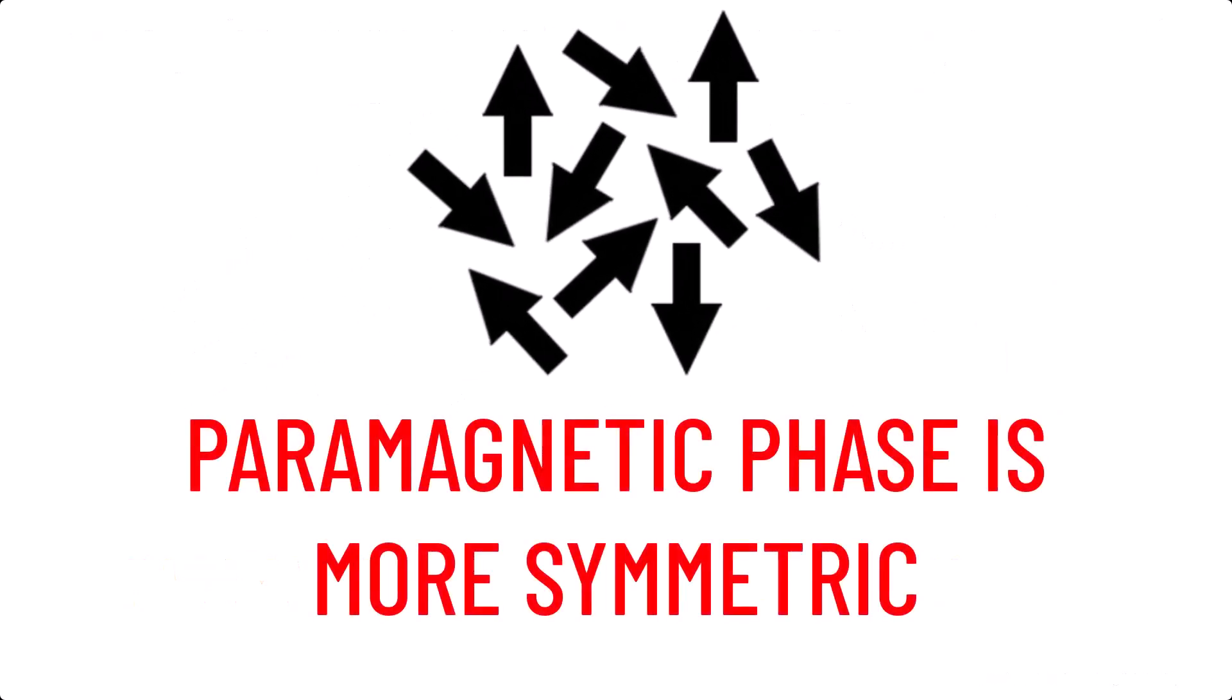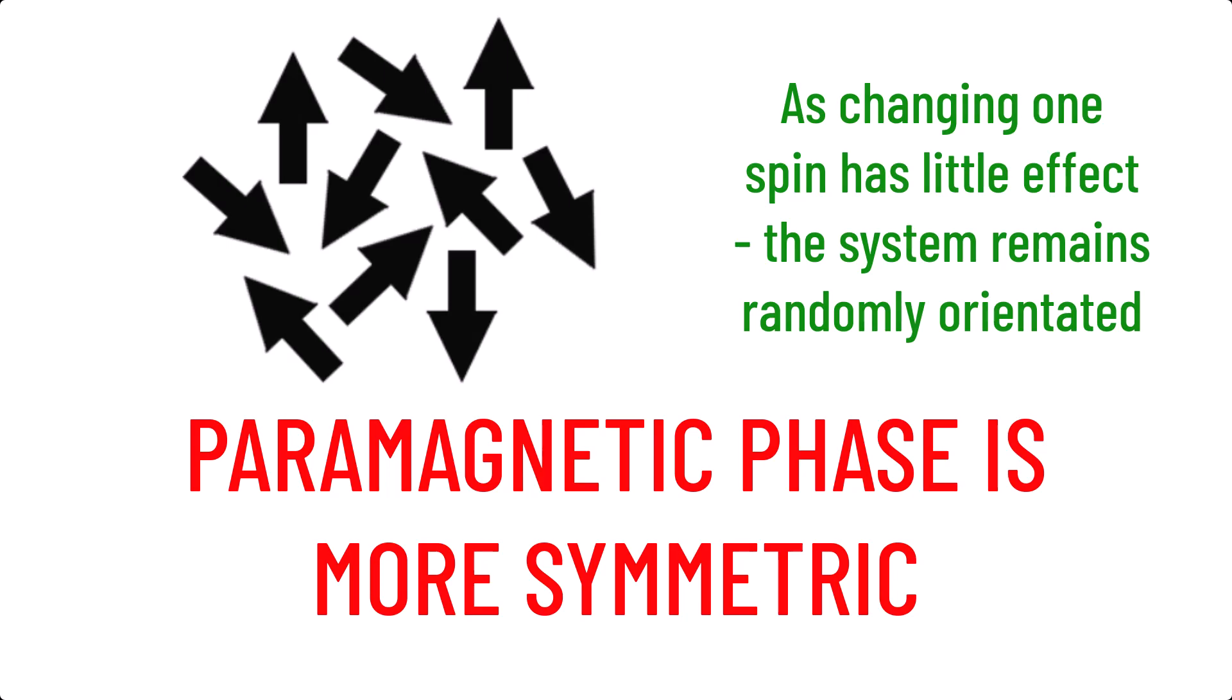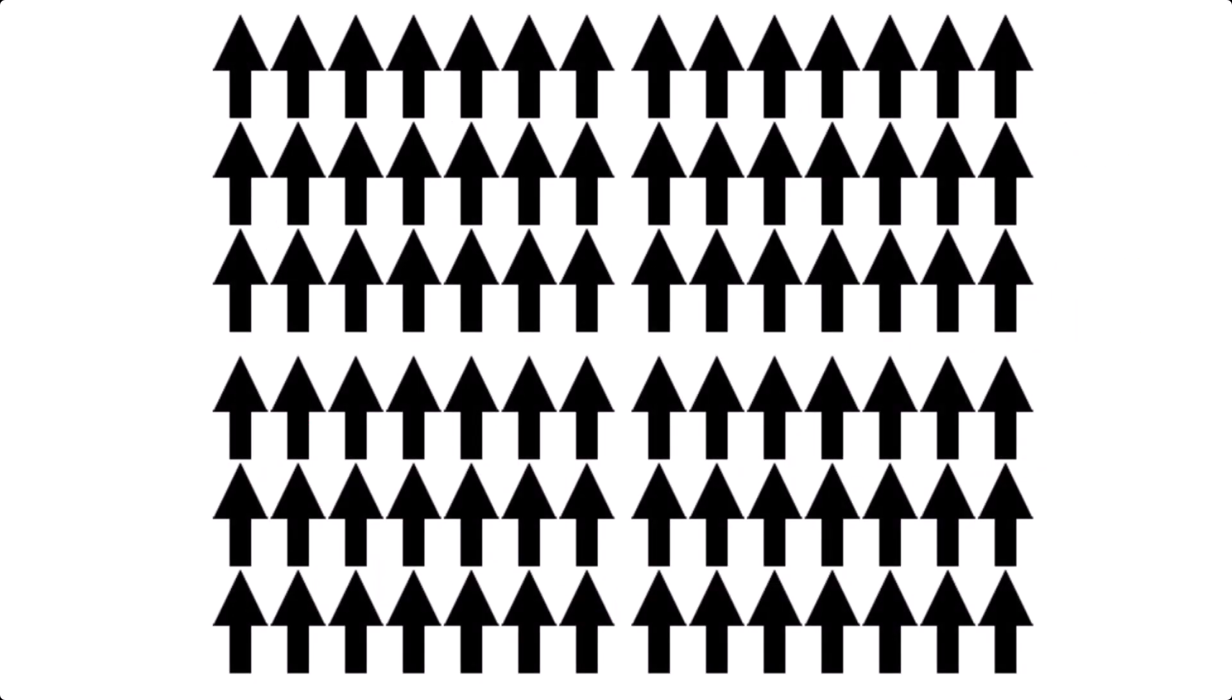It's a subtle point, but the paramagnetic phase is actually more symmetric. You can think of this as if you had many spins randomly aligned, then flipping just one of them, it would have almost no impact on the symmetry or overall order of the state. The bulk properties would still be the same. It would still on average have zero magnetization. However, in the ferromagnetic phase, it's only symmetric when all of the spins are flipped or changed at once. Flipping one of them ruins it, and so is less symmetric.